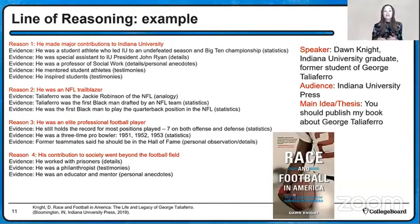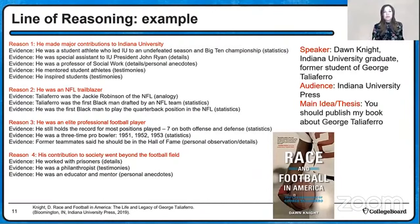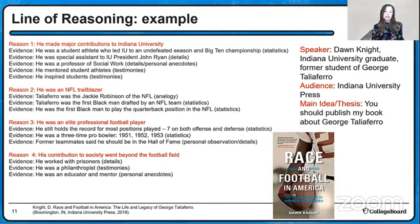I included statistics, details, anecdotes, and testimonies from student athletes, details about his position at the university, and about leading the school to an undefeated football championship. Then I moved to his being an NFL trailblazer — I used an analogy comparing him to Jackie Robinson, and statistics showing he was the first Black man drafted by an NFL team and the first Black quarterback in the NFL. Then his elite performance as a player, and finally his contribution to society overall, ending his career at Indiana University as a professor.